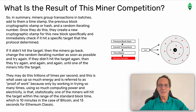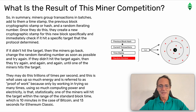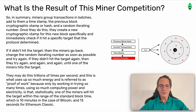What is the result of this miner competition? In summary, miners group transactions in batches, add them to a timestamp, the previous block's cryptographic stamp or hash, and the random iterating number. Once they do this, they create a new cryptographic stamp for this new block specifically and immediately check if it hit a specific target that the protocol determined.